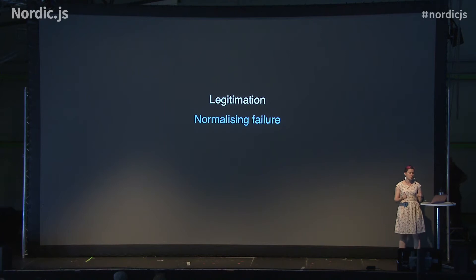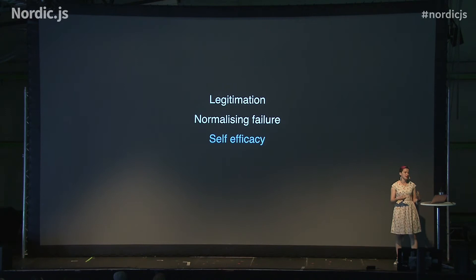Legitimation and normalizing failure work together to make it easier for us all to persevere when faced with problems we don't know how to solve. Next we have self-efficacy — supporting people's belief in their own ability to succeed. A study conducted in 2012 into first-year university students' perceptions of their coding abilities found that if they didn't believe in their own ability to successfully write code, both their performance and mental well-being decreased dramatically. A major takeaway was that students with a much higher ratio of successes to failures when learning are much more likely to develop resilience and positive self-efficacy.